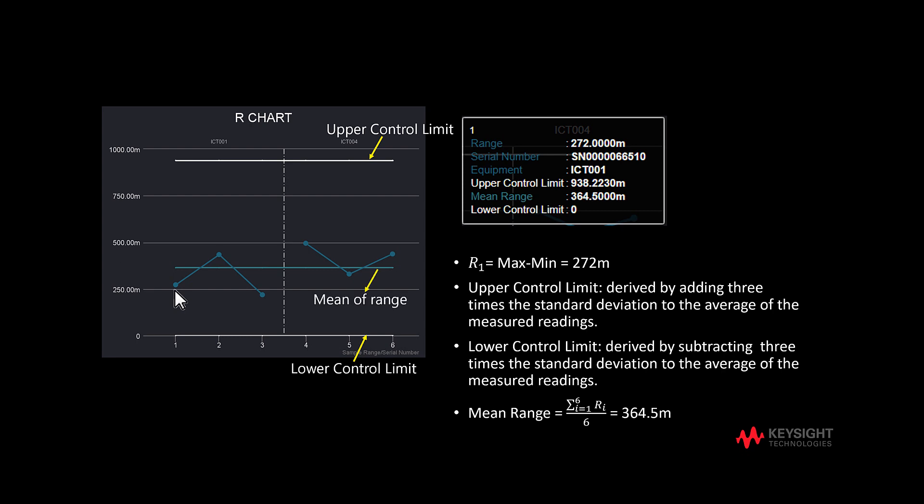The center line is the mean range — the average of six range points. In this case, we can see the measurement system variation is in control, since all points are within the limits.